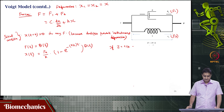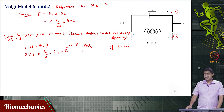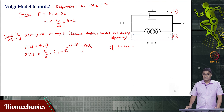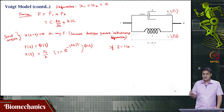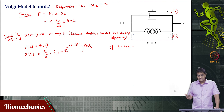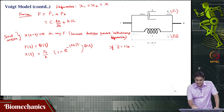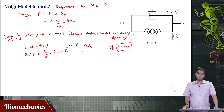This is along expected lines, because that is what you would expect from a viscoelastic material — this is the creep behavior. As time passes, the strain continues to increase under constant stress. That depends on both the damping coefficient c of the dashpot and the spring constant k, because tau equals c divided by k. Both c and k play a role in this response.